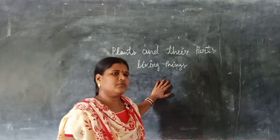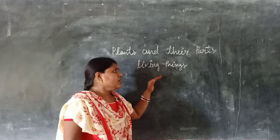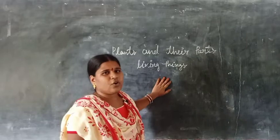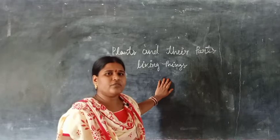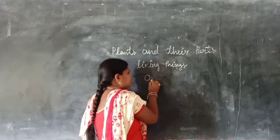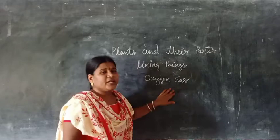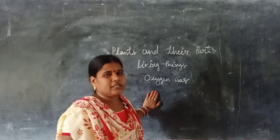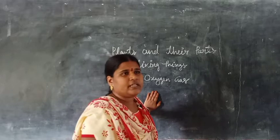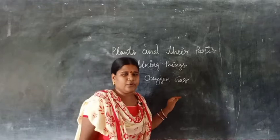Are plants helpful to us or not? Plants are very helpful to us. They give us fruits, vegetables, different types of flowers, and most essentially, oxygen gas — which is essential for our breath and for all life. We get that oxygen gas from plants. Many birds and animals make their shelter on these plants. We also get some medicines from plants. That's why plants are very helpful.